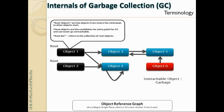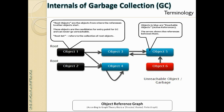Whenever GC kicks off, it starts from the root objects. The term 'root set' refers to the collection of root objects. GC iterates through all root objects in the root set and then starts its search for reachable objects inside your object tree.